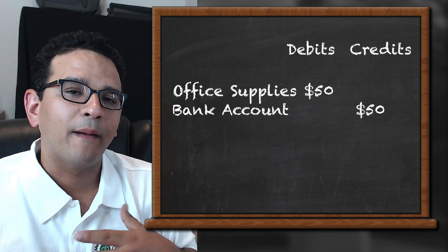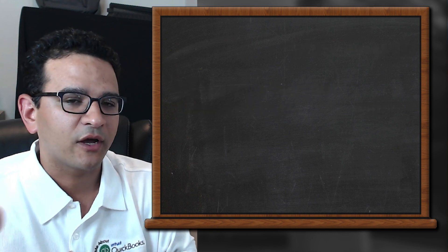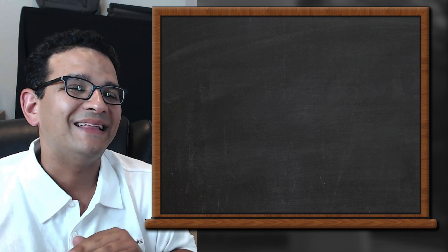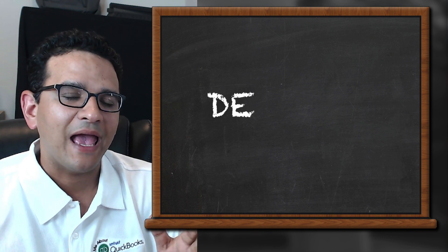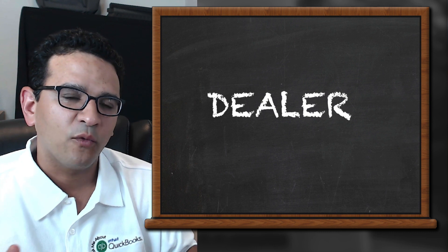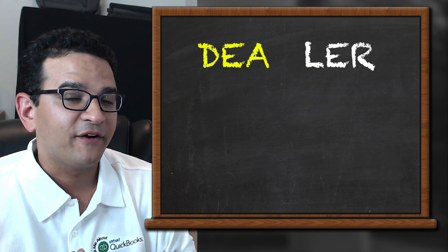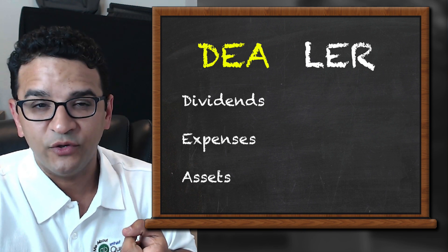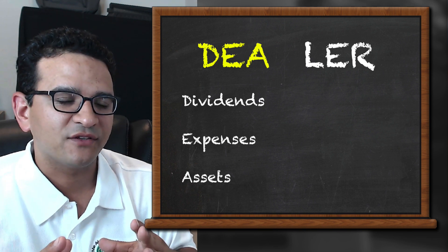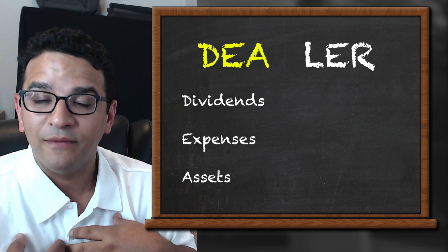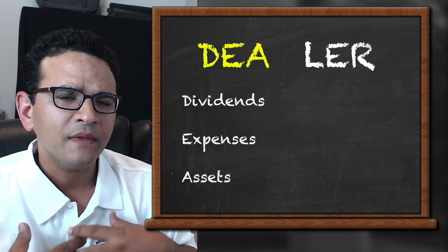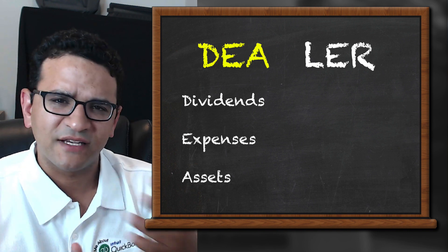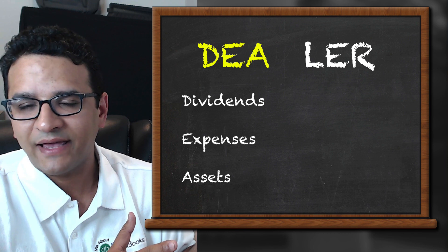The best way to remember which type of accounts are either a debit or a credit is the acronym DEALER — D-E-A-L-E-R. We're going to split the word DEALER in two. The first three letters, D-E-A: D is for dividends or distributions — when the business owner takes money out of the business for personal benefit. E represents expenses — all business expenditures are debit accounts.